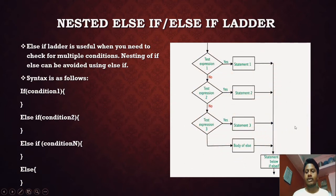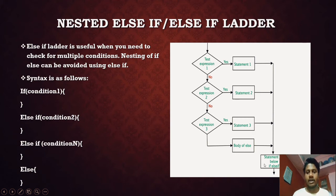In the flowchart: check expression one, if true execute statement 1. If false, check condition 2; if true, execute that block. Then else-if for more conditions. If all conditions are false, the else block is executed. This covers the entire if statement category.